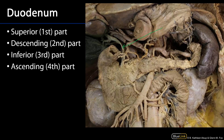The duodenum is succeeded by the jejunum, which continues the process of absorption. The duodenum is a C-shaped organ which enjoys a very close relationship to the pancreas. The duodenum consists of four parts. The first part is known as the superior part of the duodenum, and it's approximately five centimeters in length. The first two and a half centimeters of that is going to be intraperitoneal because it is contiguous with the stomach.